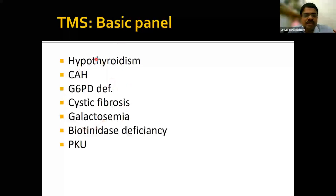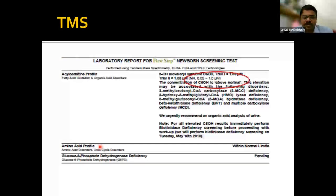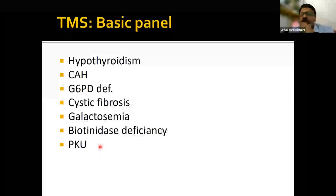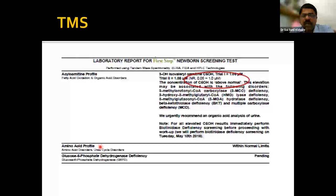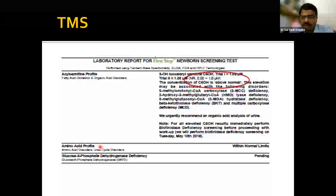Different panels of TMS are available from labs. The basic panel covers seven disorders: hypothyroidism, CAH, G6PD, cystic fibrosis, galactosemia, biotinidase deficiency, and phenylketonuria. Extended panels are also available. The basic panel costs around 1000 rupees; extended panels range from 3000 to 5000 rupees. Combined TMS and GCMS costs approximately 5000 to 6000 rupees.